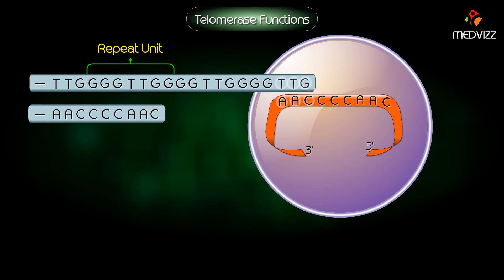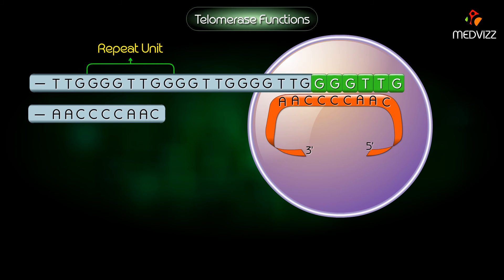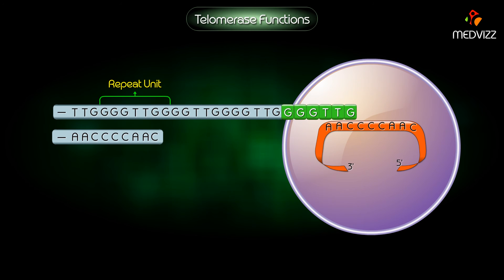Part of the RNA sequence hybridizes with a single-stranded overhang on the DNA strand, leaving a single-stranded overhanging RNA sequence. The repeat unit shown here is from Tetrahymena, which is the model organism used in telomere and telomerase research. The DNA polymerase function of telomerase then synthesizes the DNA strand complementary to the RNA found in the telomerase, and subsequently translocates to the end of the newly synthesized strand, and the process repeats itself. Many cycles of repeats can occur.